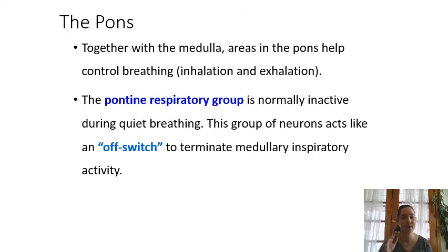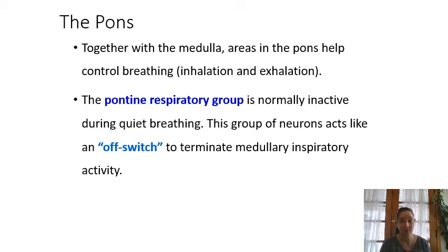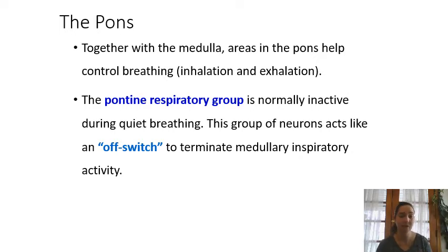Moving up just superior to the medulla oblongata is the pons. The pons works with the medulla to help control breathing — neither one fully controls breathing on its own. In the pons there's an area called the pontine respiratory group, which normally lays low during quiet breathing, but kicks in when you're thinking about your breath, taking a big breath on purpose, or moderating your breathing while talking.